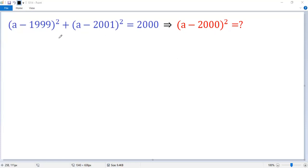So we change the given condition to a minus 2000 and then compare there, so we need to plus one squared. For the second term, a minus 2000, compare and then we know we need to minus one squared equals 2000.